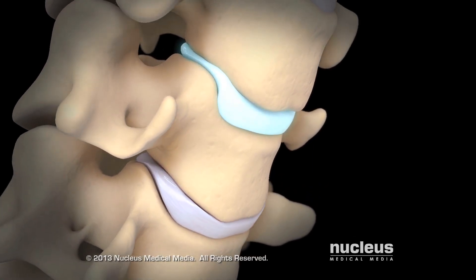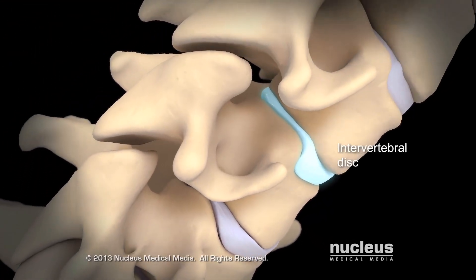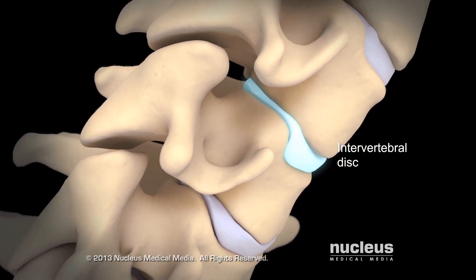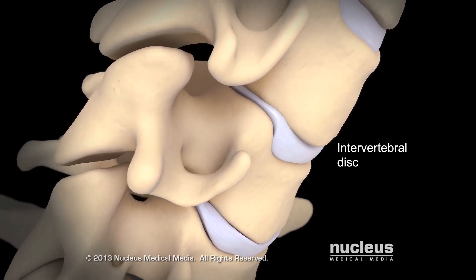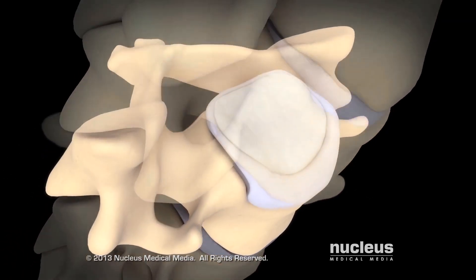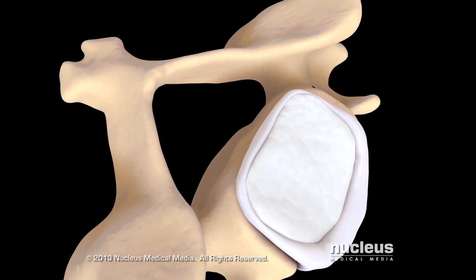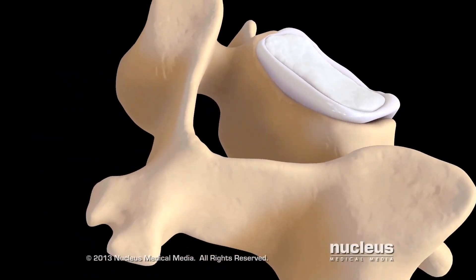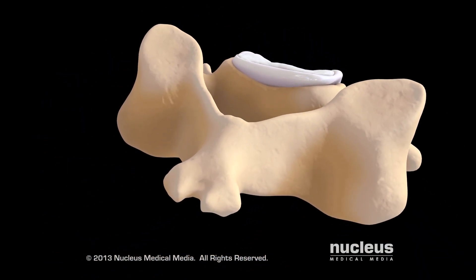Between most vertebrae is a soft cushion of cartilage called an intervertebral disc. The back part of each vertebra has a curved section called the vertebral arch. Except for the first vertebra, each vertebral arch has a bony projection called the spinous process.